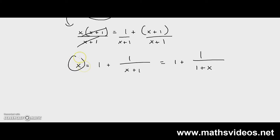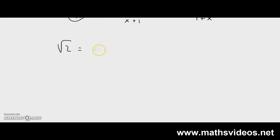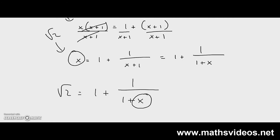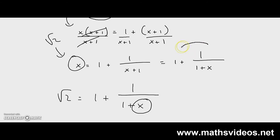So we know that x, which is in fact the square root of 2, is equal to 1 plus 1 over 1 plus x. Now, if I get rid of this x over here, I can come up with an approximation of the square root of 2, but it wouldn't be a very good one. So what I need to continue doing is plugging this value over here into these x's.